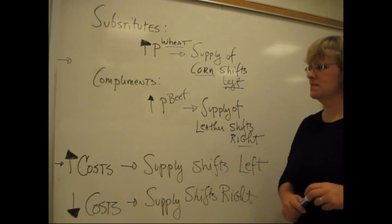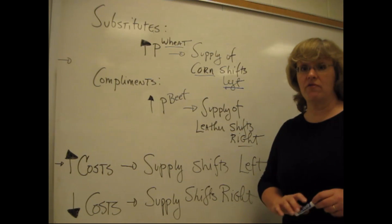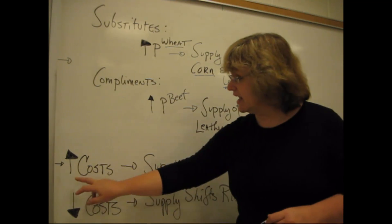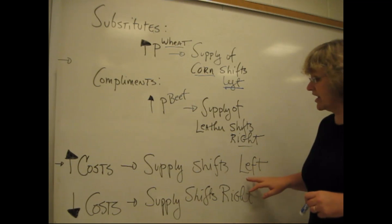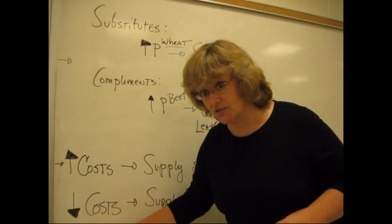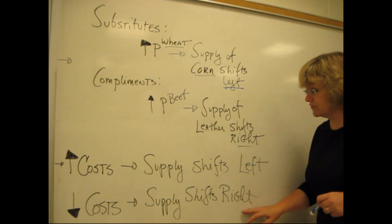Next is cost of inputs. Now, cost has pretty straightforward effect on supply. An increase in the cost of inputs will shift the supply curve to the left, cause it to decrease. A drop in costs will cause the supply curve to shift to the right.